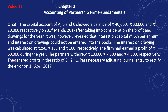During the year, the partners withdrew Rs. 10,000, Rs. 7,500 and Rs. 4,500. They shared profit in the ratio 3:2:1. Pass the necessary adjusting journal entry to rectify the error on 1st April 2017.